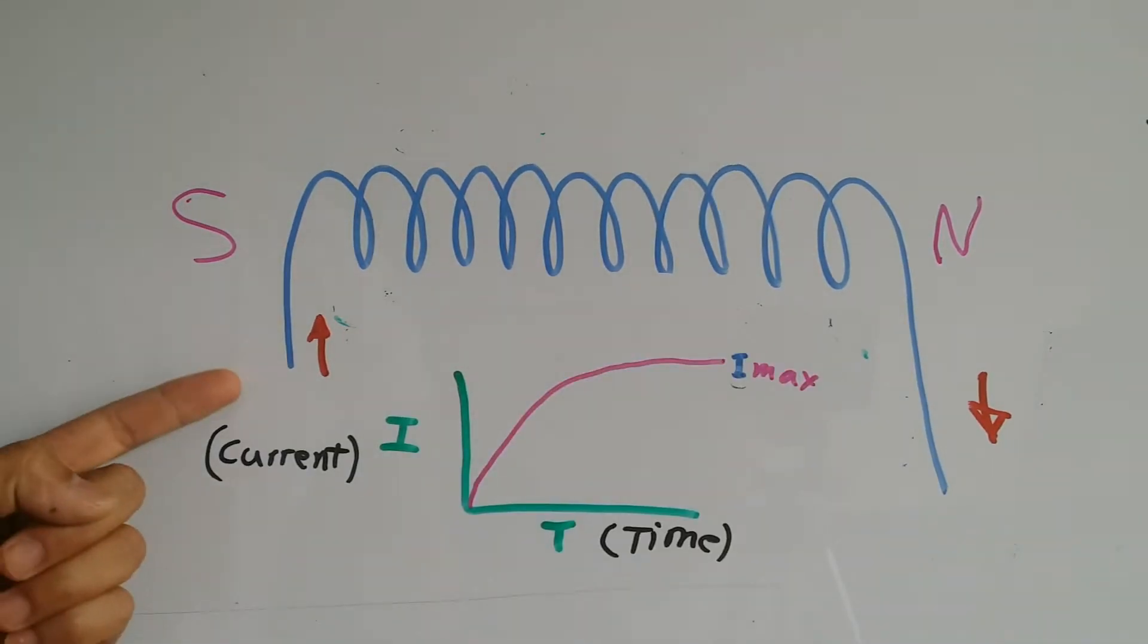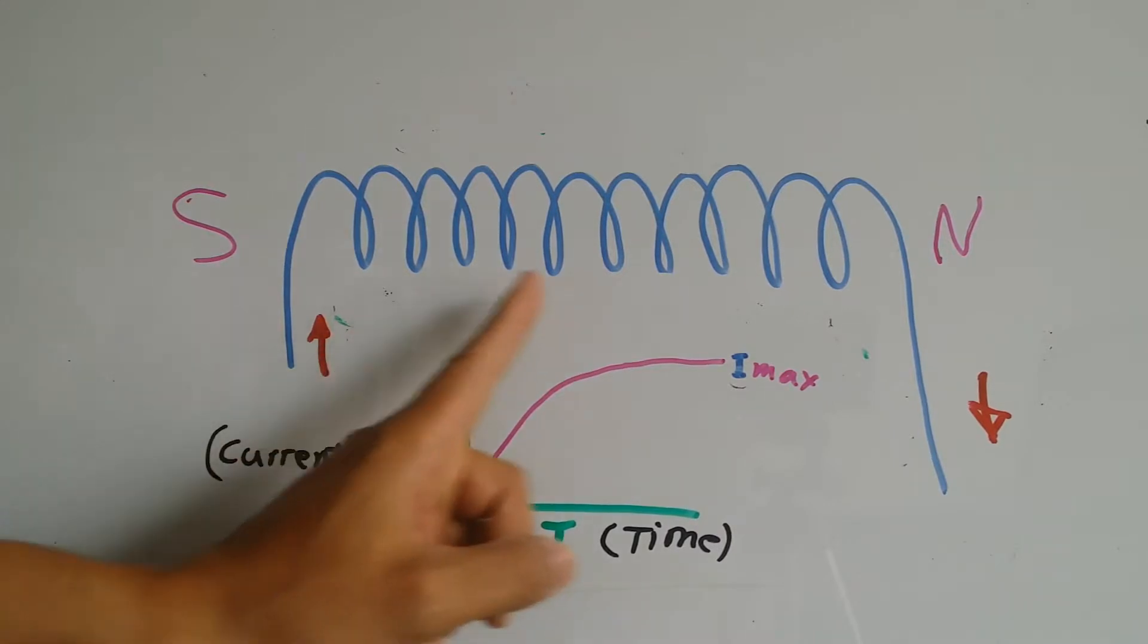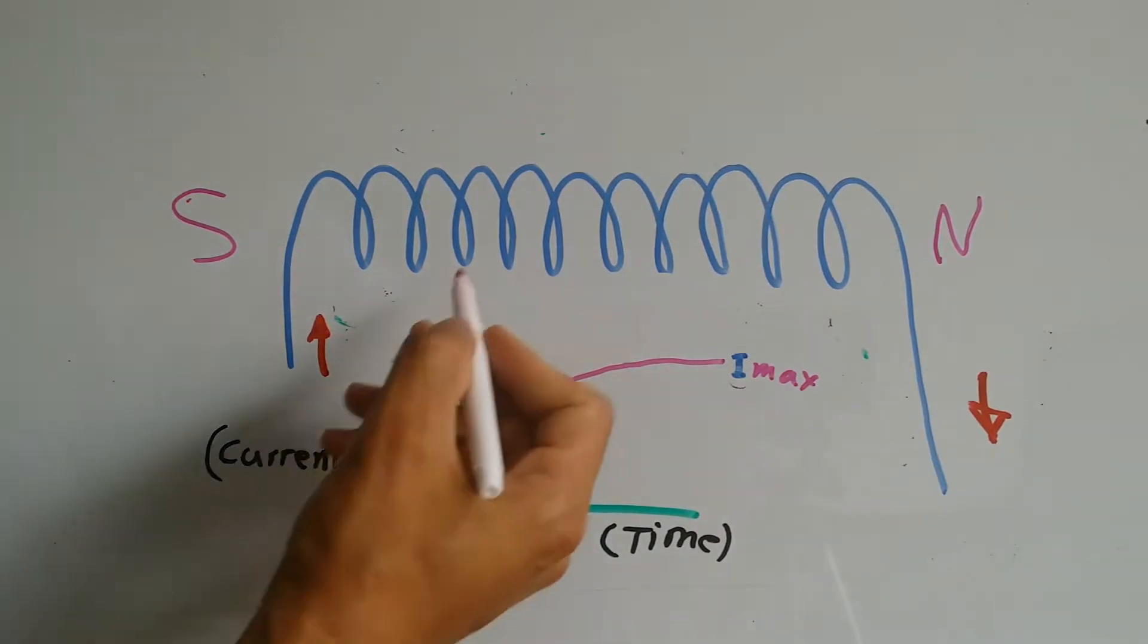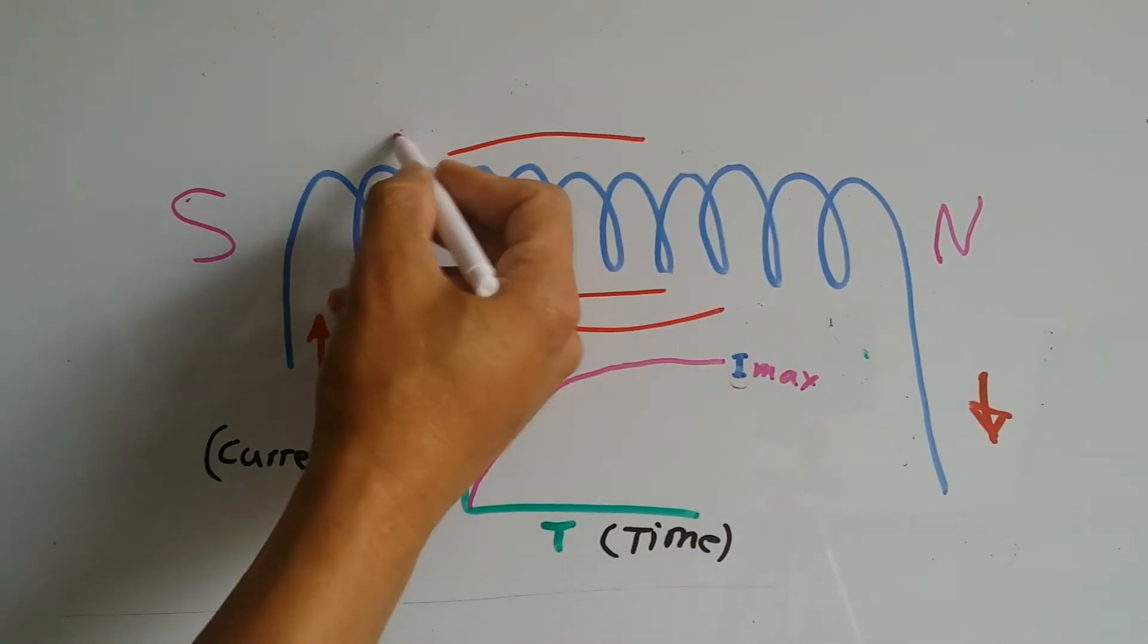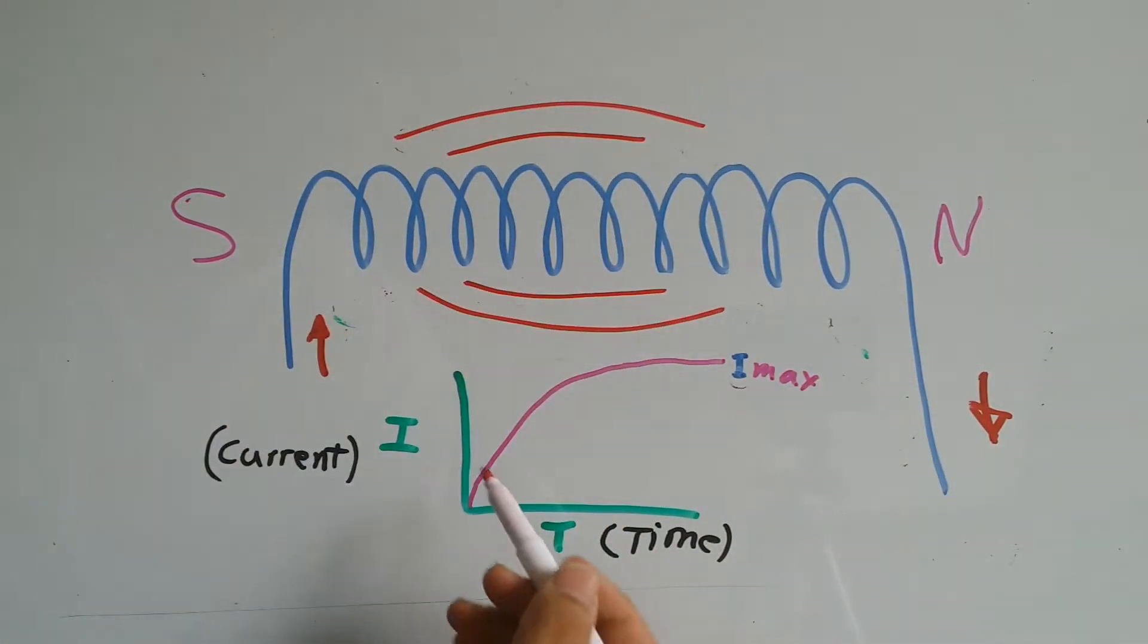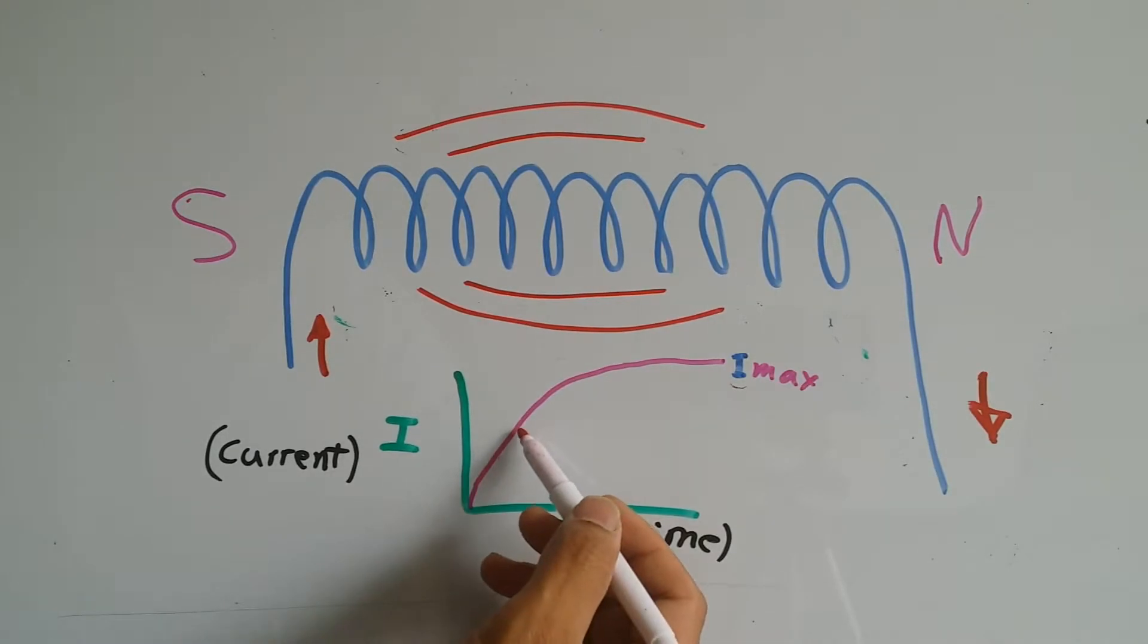When current starts flowing through the inductor immediately when it gets energized, current is very minimum so not much current flows. Then the field starts slowly building up. As the field builds up, more current starts flowing through the inductor.